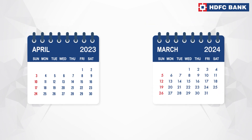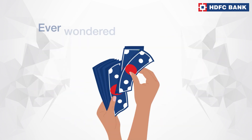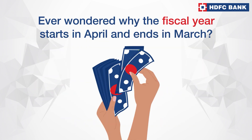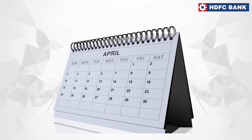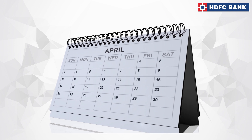In India, the financial year or the fiscal year begins on April 1 and ends on March 31. But why does it always begin in April? Let's find out.